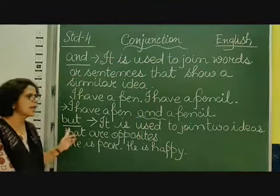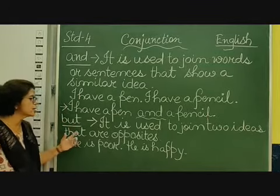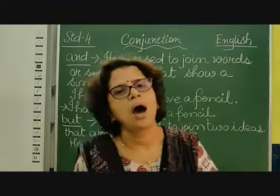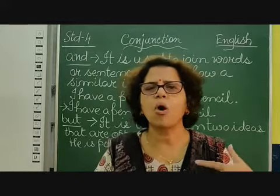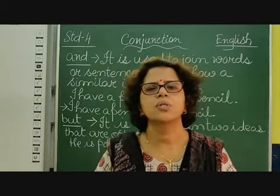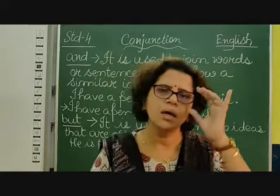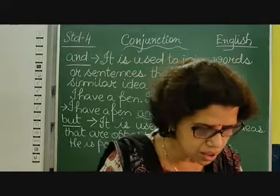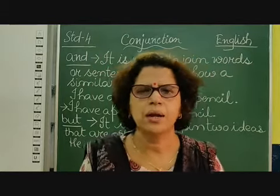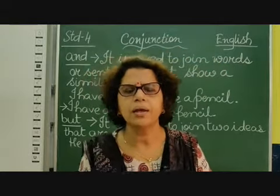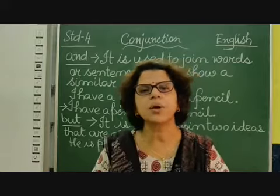Coming to the next conjunction, which is 'but'. Now, 'but' is opposite to 'and' — 'but' is used to join two ideas that are opposite. For example: I went to school. It was closed. You went to school but the school was not open — so you say: I went to school but it was closed. Another example: The sky is cloudy. It did not rain. When there are clouds we think it will rain, but: the sky was cloudy but it did not rain. So 'but' is used when it is an opposite idea.